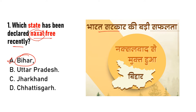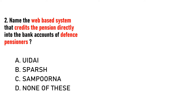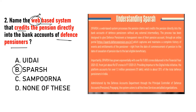Next question: name the web-based system that credits pension directly into the bank account of defense pensioners. Defense se jo retire hote hain, unke bank account mein directly pension transfer karne ke liye jo web-based system hota hai — uska naam kya hai? Options: IDEI, SPARSH, SAMPURN, or NFDES. Answer will be SPARSH.